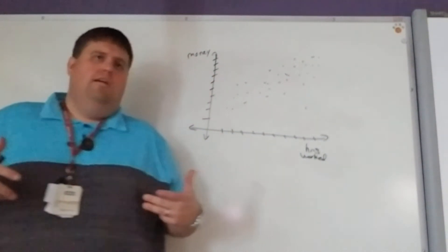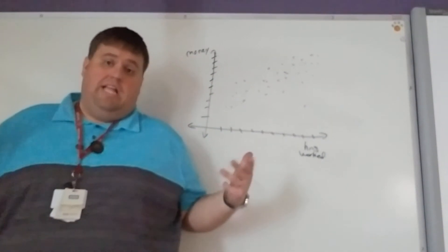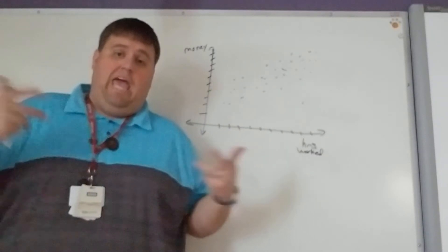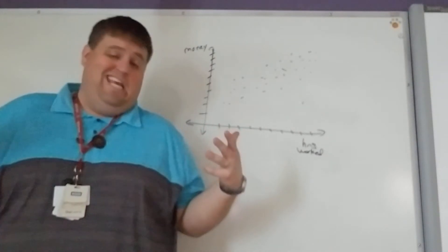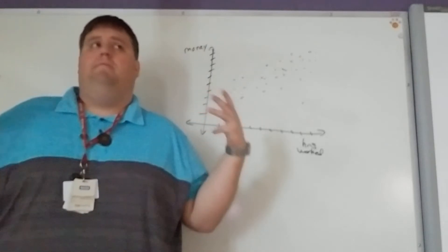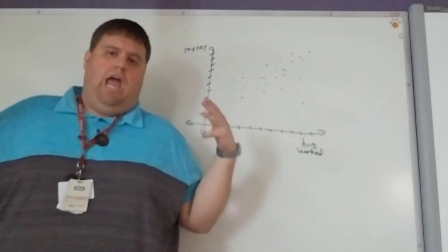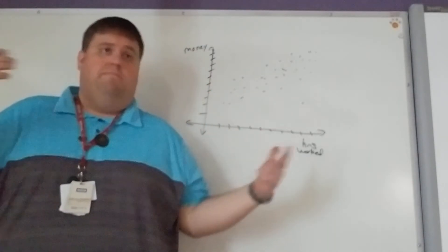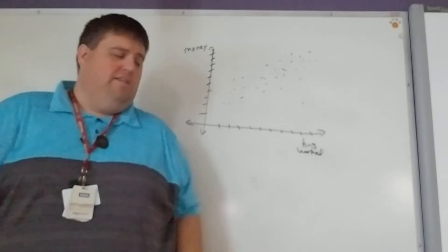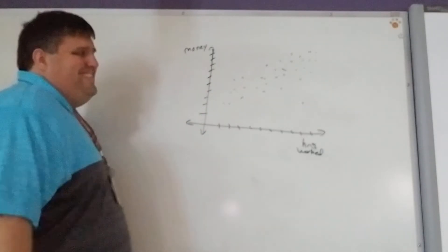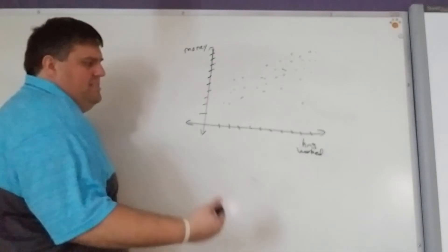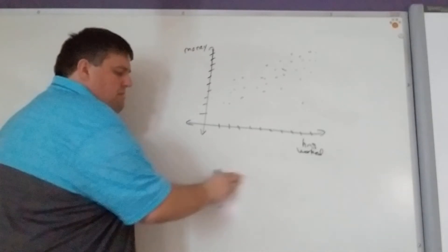So our scatter plots are going to tell us a lot of information. Any time that we have a lot of data that we're compiling, maybe for like research or something, and we're trying to find out, is there some sort of connection to these two things? Oftentimes we're going to look at a scatter plot, and that's going to help us to tell that. And when we have scatter plots, there's three different things that can happen.